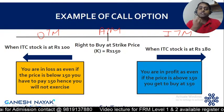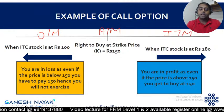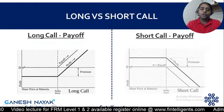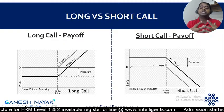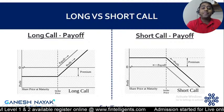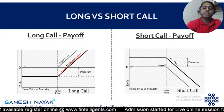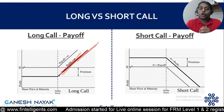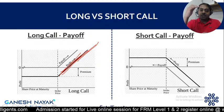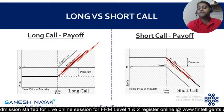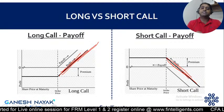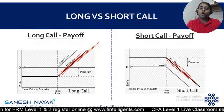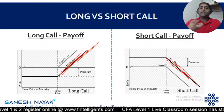To summarize: a call option is profitable when the stock price goes up. In the long call position, you profit when the stock price rises. In the short call position, you make losses when the stock price goes up. The key point to remember for the factors section: the call price will go up when the underlying asset moves up.